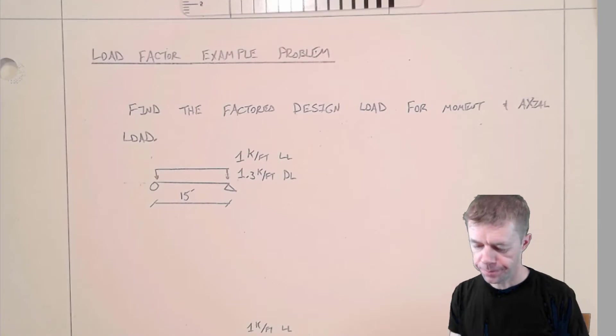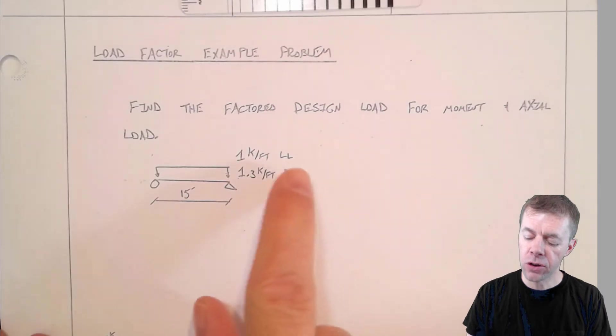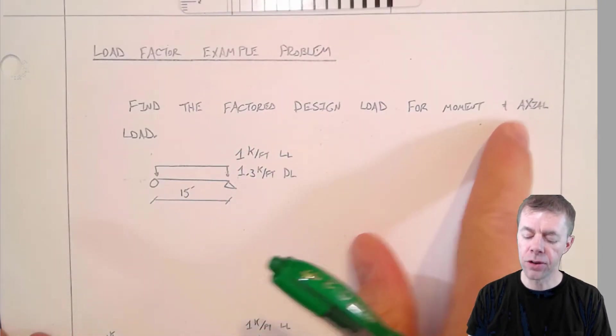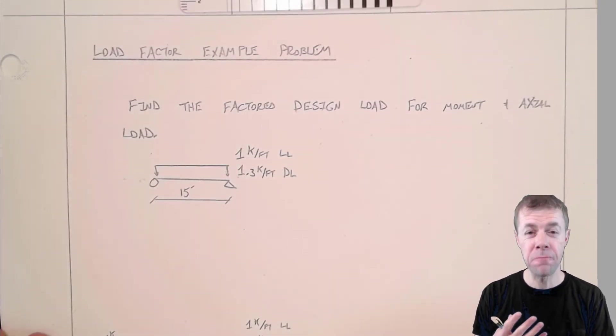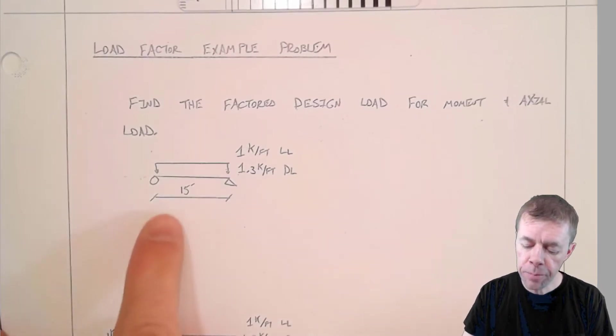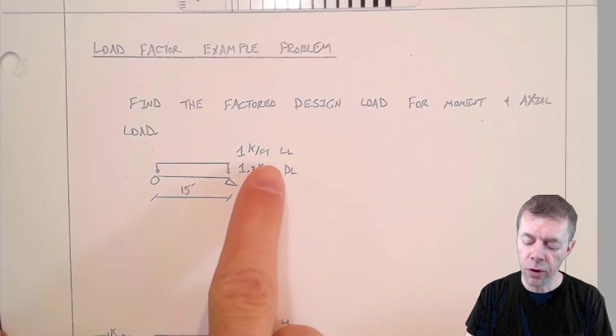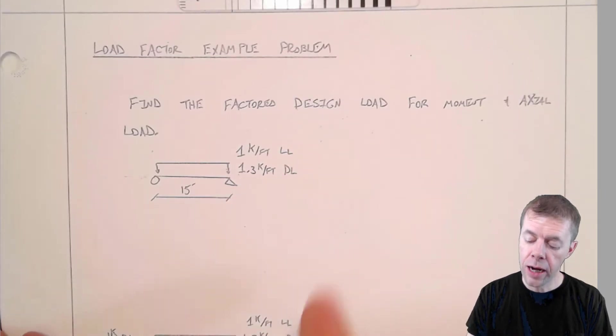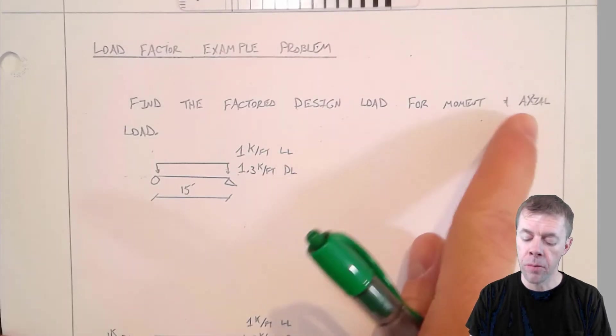Let's work some example problems. I'm going to work three problems here and find the factored design load for the moment and axial load for each one of these structures. These structures are pretty simple but it's good to start out simple and then build up from there. I've got a simply supported beam, 15 feet long, with a live load and dead load on it. I want to find the design moment, the maximum moment, and the maximum axial load.